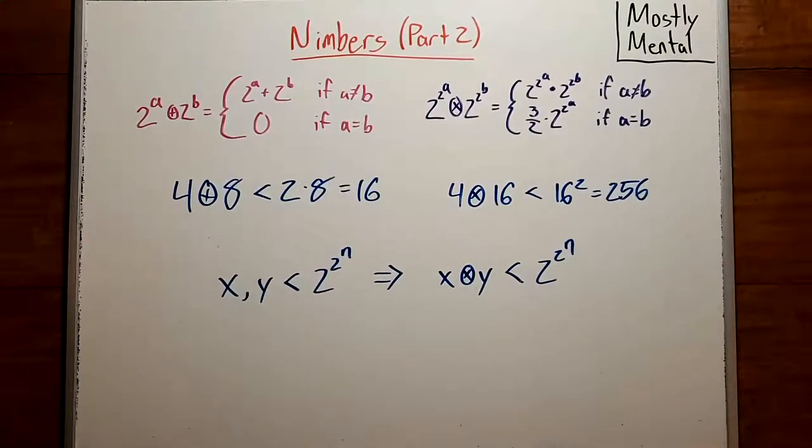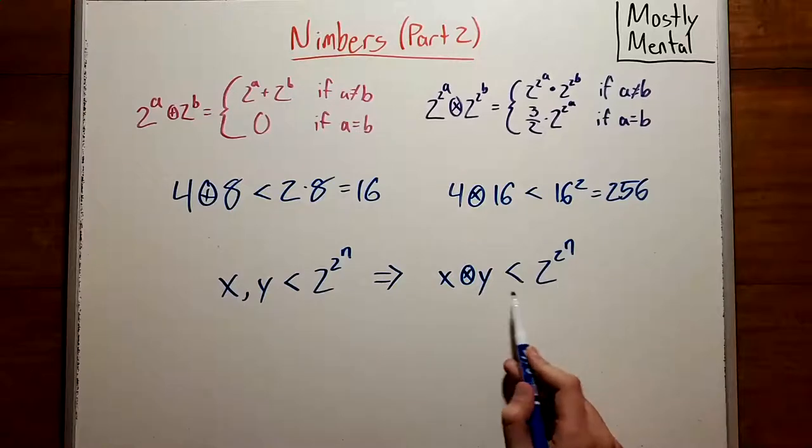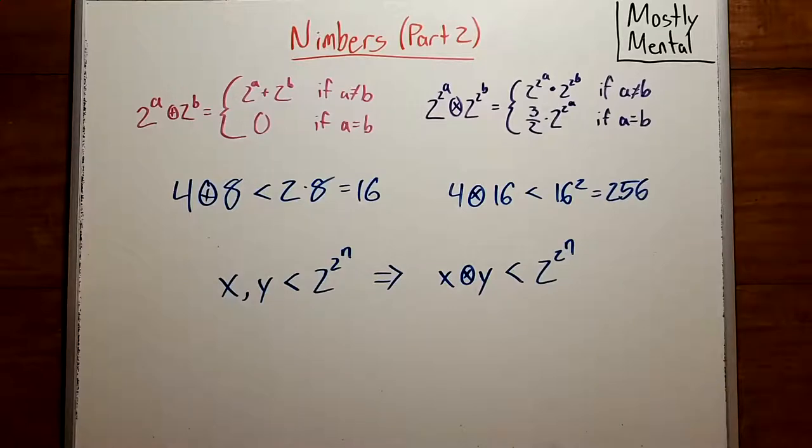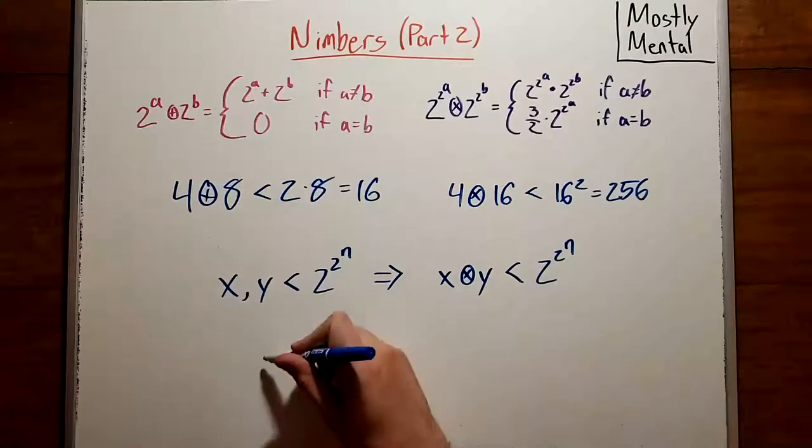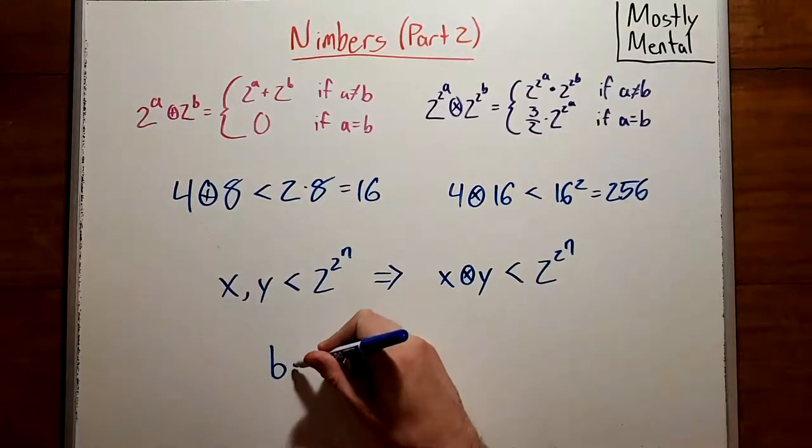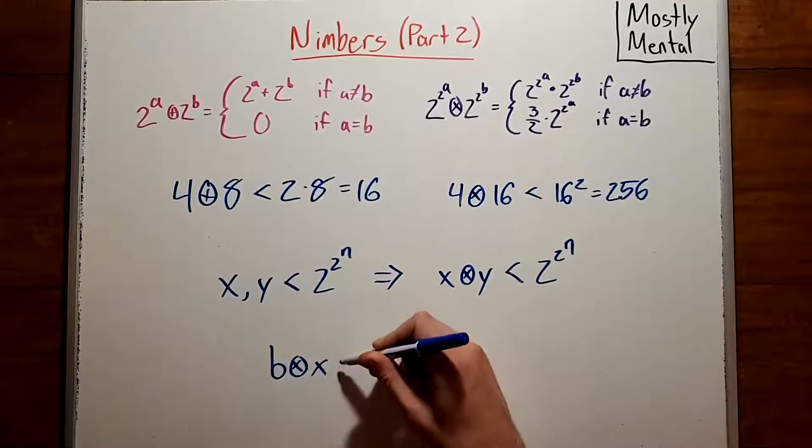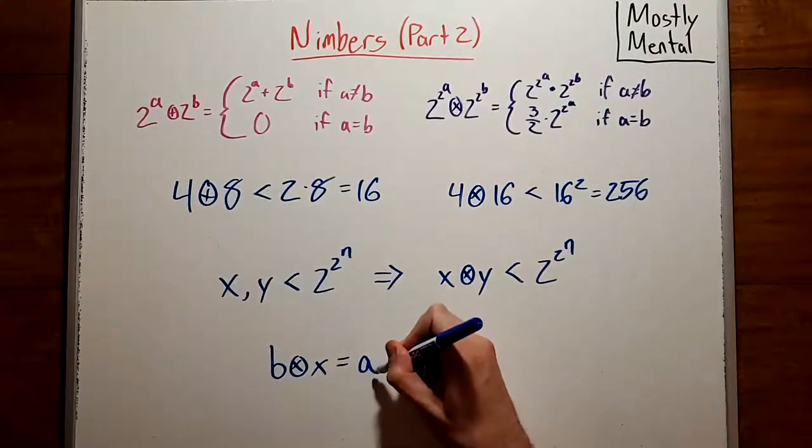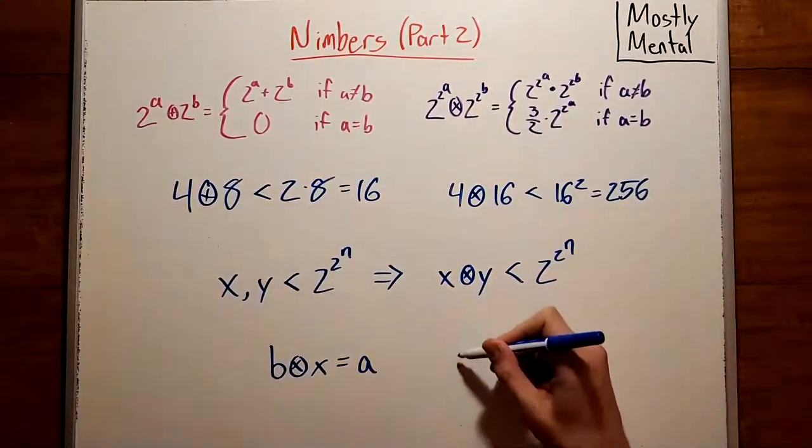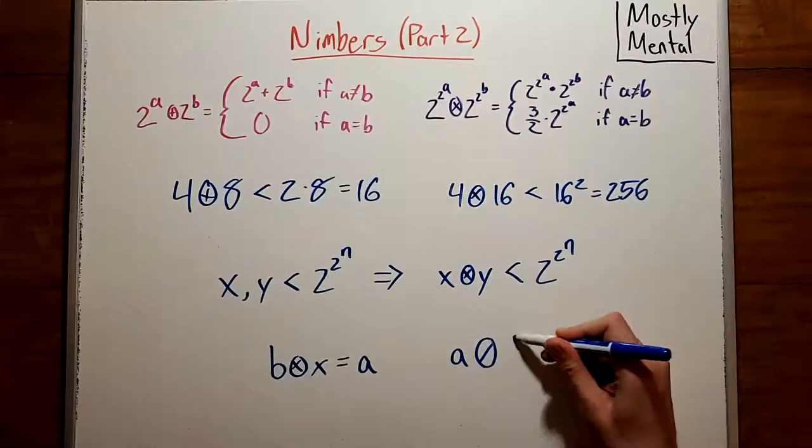And so if we look at any row of the multiplication table, the first 2 to the 2 to the n entries will all be less than 2 to the 2 to the n. And as we said, they'll all be different. Which means every nimber must appear in each row and column exactly once. That is, for any nimber b, there's some other nimber x, which we can multiply by to get a. Or, said another way, we can divide a by b.